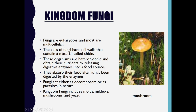Coming to the third category, Kingdom Fungi: fungi are eukaryotes and are mostly multicellular. The cells of fungi contain a special material called chitin. These organisms are heterotrophic and obtain their nutrition by releasing digestive enzymes into the food source. They absorb their food after it has been digested by the enzymes. Fungi act either as decomposers or as parasites in nature. Examples include molds, mildews, mushrooms, and yeast.